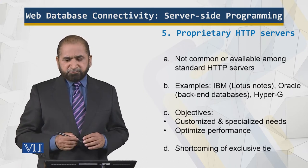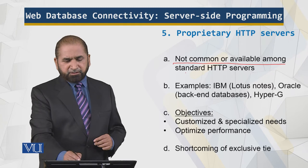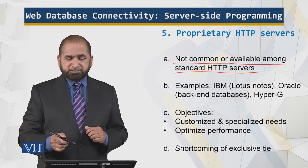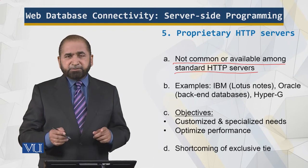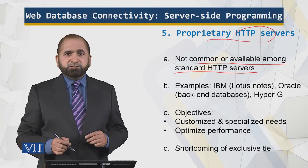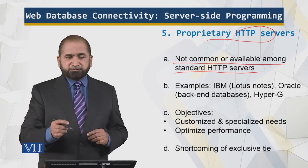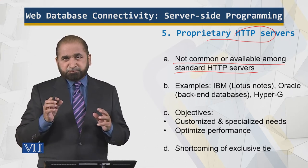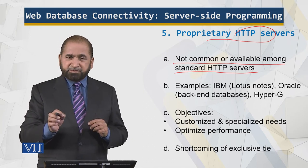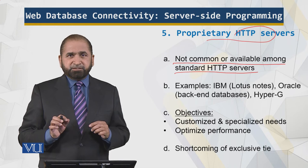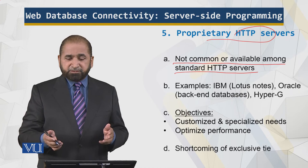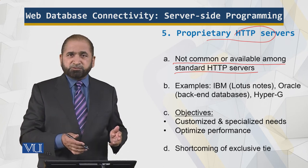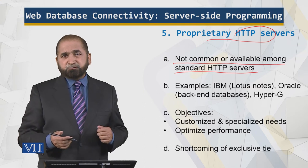For the proprietary HTTP servers — not common or broadly available HTTP servers — the functionality you are looking for is specialized functionality. For example, IBM has proprietary servers for Lotus Notes, and Oracle has them for backend databases, and Hyper-G is for certain link management. So that specialized functionality is there in proprietary HTTP servers. And if it's not there, you may be able to write it for that particular environment. If you are not using Lotus Notes, you may be able to write or buy something equivalent from somewhere else.